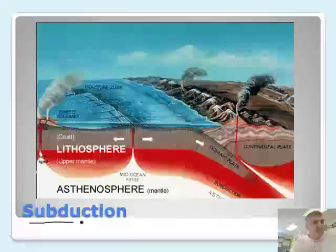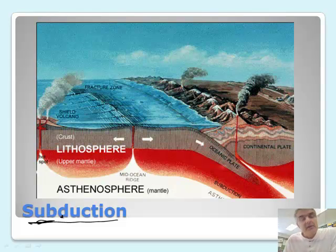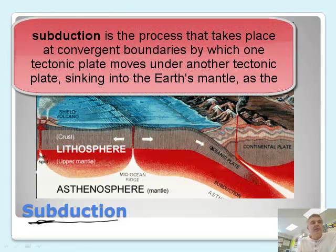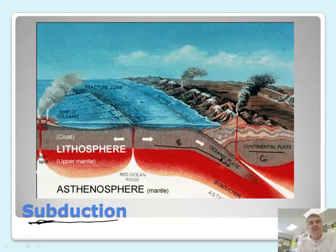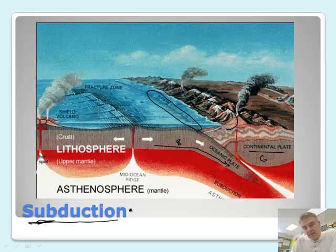Subduction. Now this is a pretty cool concept. The word subduction comes from the word 'sub,' which means underneath — like a submarine travels underneath the water. Here we have the oceanic plate, which is more dense than the continental plate. This is made of basalt where the other is made of granite, so it goes underneath because it's more dense. It creates a couple of interesting features: it'll create a trench and it'll create mountains, particularly volcanic mountains. This is what's happening on the coasts of both North and South America. Subduction is where one plate goes underneath another plate.